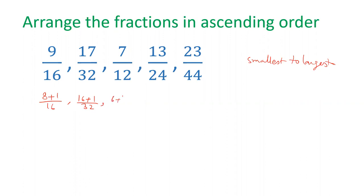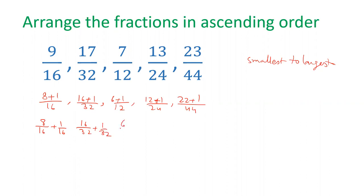Next is 6 plus 1. Next is 12 plus 1. Next is 22 plus 1. So the fractions become: 8 by 16 plus 1 by 16, then 16 by 32 plus 1 by 32, then 6 by 12 plus 1 by 12, then 12 by 24 plus 1 by 24, and 22 by 44 plus 1 by 44.